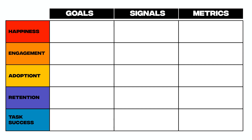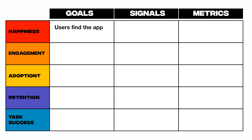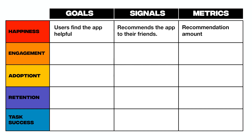To use this framework, a team will identify goals, signals, and metrics for each of the five categories of HEART, as shown in the figure. Goals are broad objectives — for Happiness, a goal might be "users find the app helpful." Signals are indicators that your team is making progress toward that goal — a signal might be "users recommend the app to their friends." Metrics are quantifiable data points that indicate success or failure — you can measure how many users tend to recommend the app to their friends. This framework can be applied at different levels, from the entire product to a specific feature. You don't need to create metrics in all categories; choose the ones most relevant to your specific project.